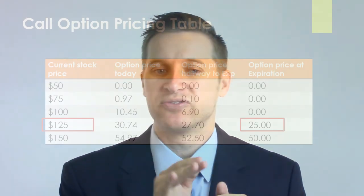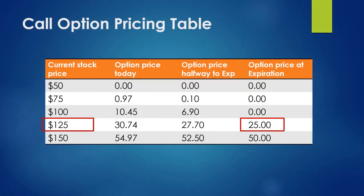You need the current price to be above the exercise price to actually make a profit. You're going to buy the $100 worth of stock and hopefully turn around and sell it at a higher price for a profit — the difference between those two prices is your payout. At a current price of $125, the future value is $25. At $150, the future value is $50, and that's going to be your profit.